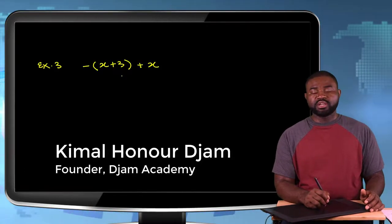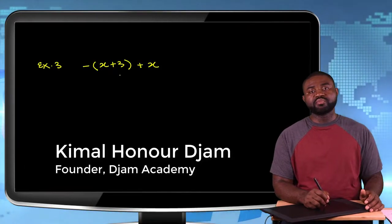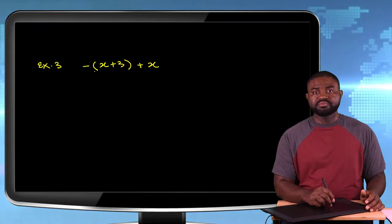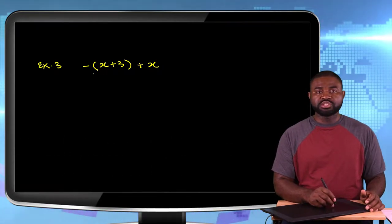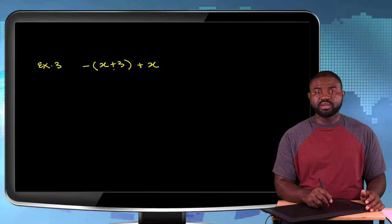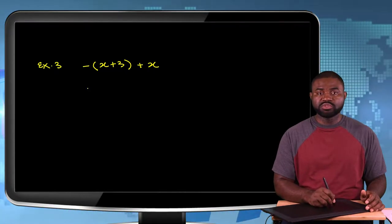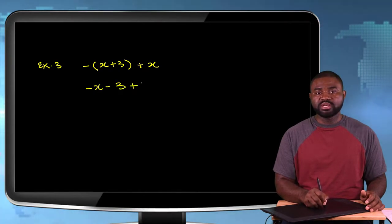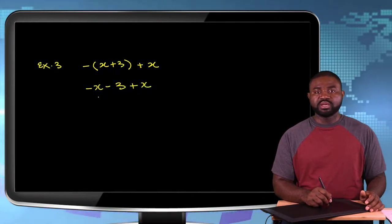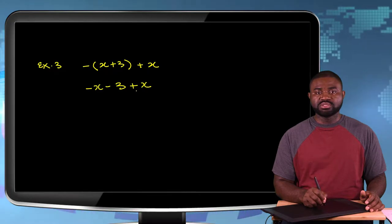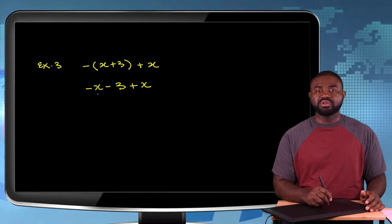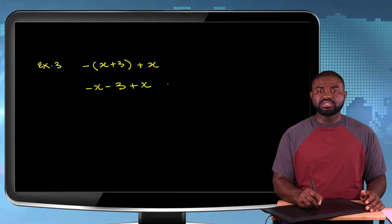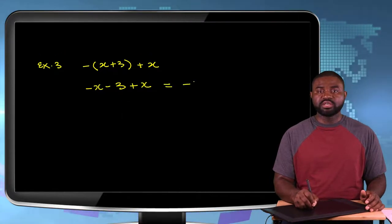Let's simplify this expression. The very first thing is we need to expand this bracket, so we multiply everything inside the bracket by minus one. This gives us minus X minus 3 plus X. Now minus X plus X is zero, so this simplifies to minus 3.